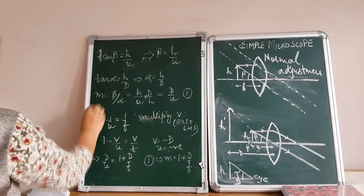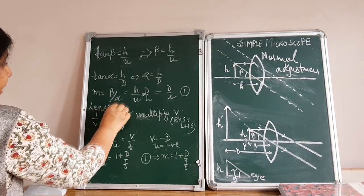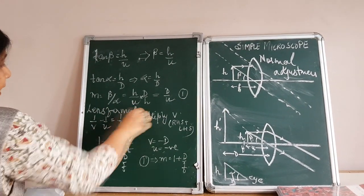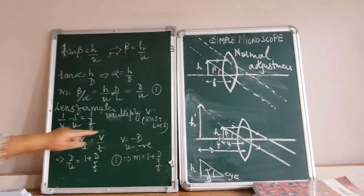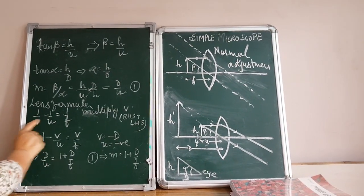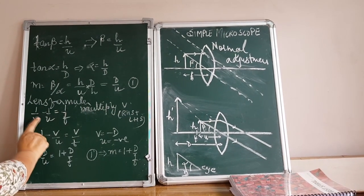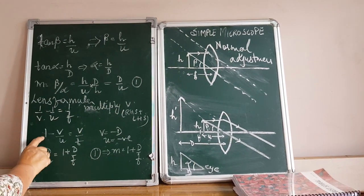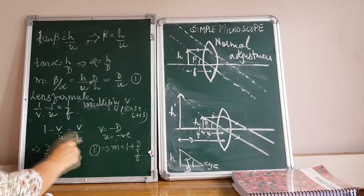We have the lens formula which says that 1 by V minus 1 by U equal to 1 by F. If I multiply V on both sides, that is right hand side as well as the left hand side, I get 1 minus V by U equal to V by F.